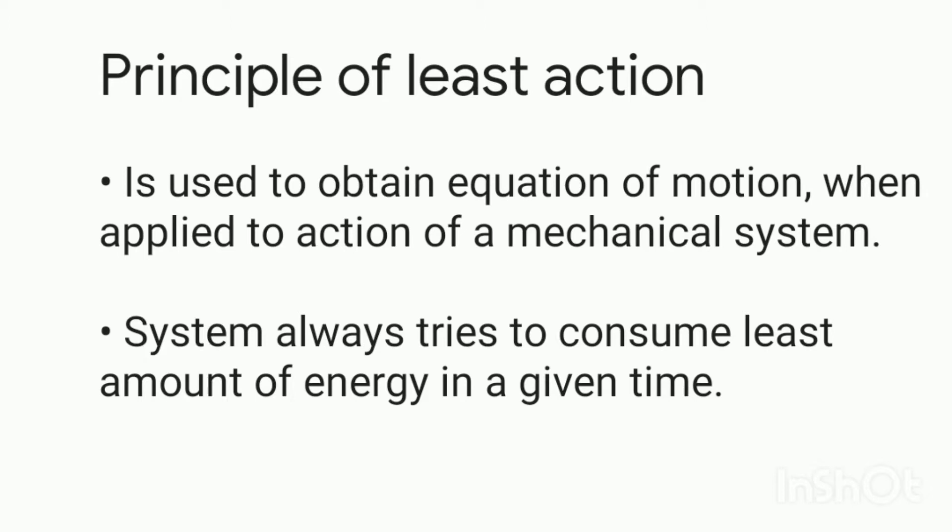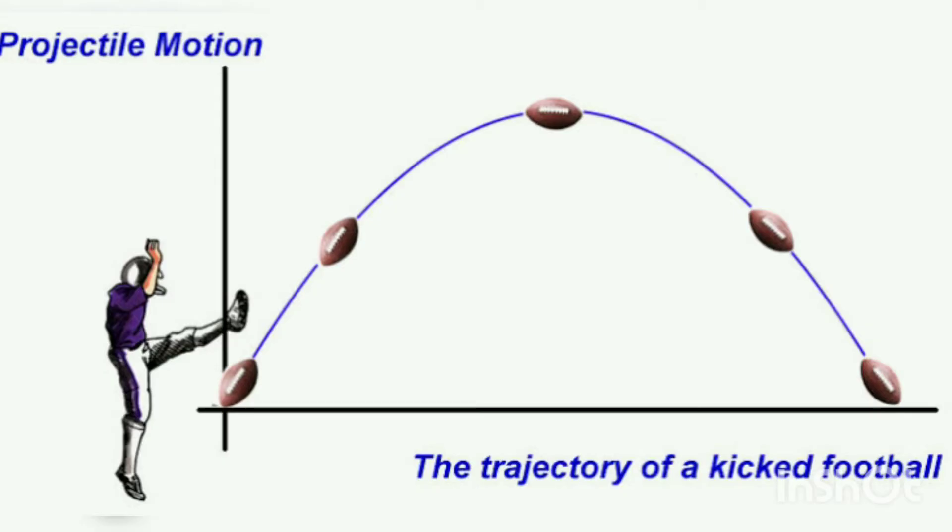It becomes very easy to understand by looking at examples of this principle. The trajectory of the ball is in a curved shape. We should concentrate on two things: Why does the trajectory of the ball take a curved path and why doesn't it differ?